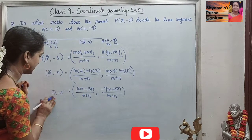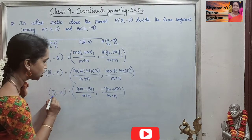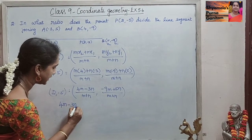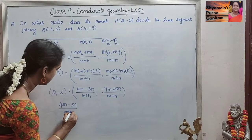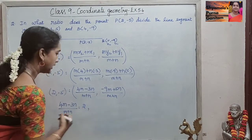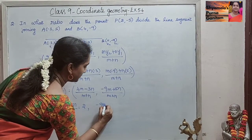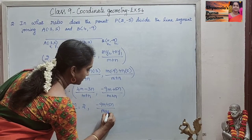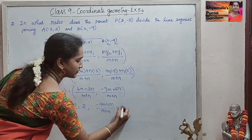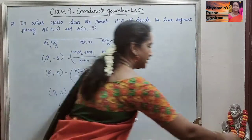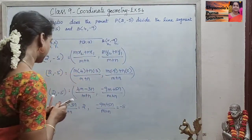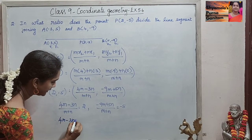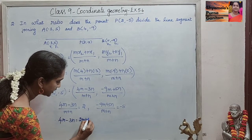So (2, -5): now we will equate 2 with the x-coordinate. So (4m - 3n) / (m + n) is equal to 2, and (-9m + 5n) / (m + n) is equal to -5. Now we will simplify this. So 4m - 3n equals 2m + 2n.